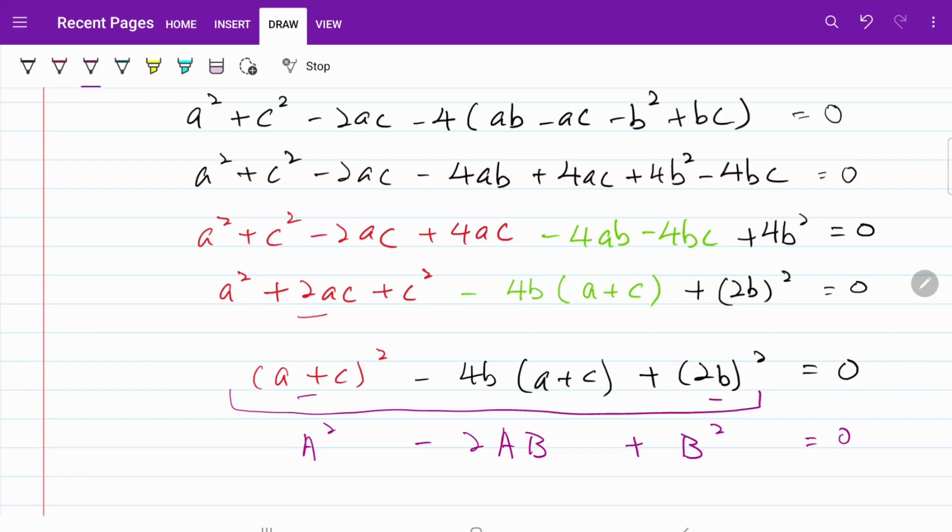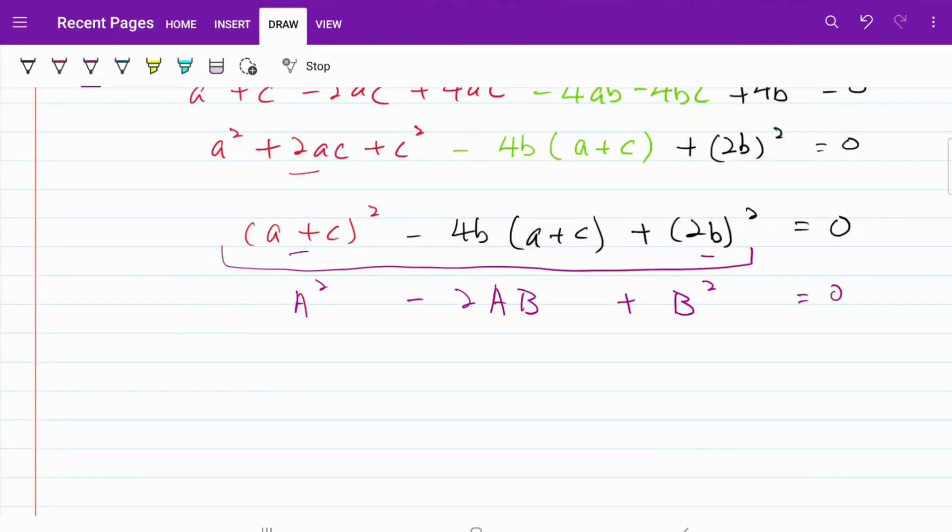Let's tidy things up properly. Let me write down this quadratic expression in the proper form of (A - B)². What I have is [(a + c) - 2b]² = 0.